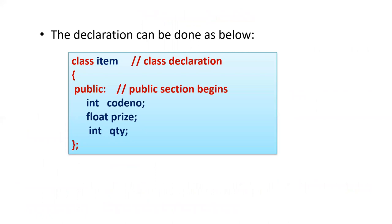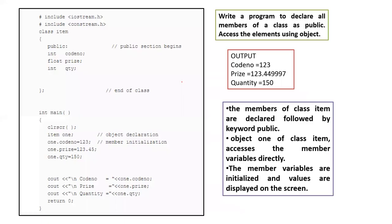Here is an example showing the keywords highlighted in red: class, curly brace, public, and termination with semicolon. These are the variables and this is the name of the class. This is the same example as the structure, but using the class keyword. Here you have the object declaration, member initialization, and since these are public member variables, you access them with the object: 'one.code_number', 'one.price', and 'one.quantity'.